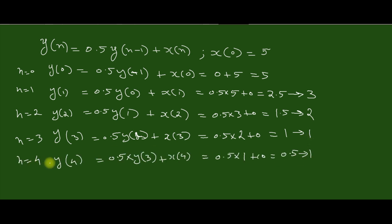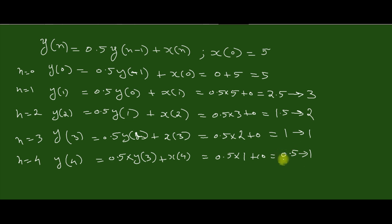For n=4, y(4) = 1. If we repeat for n=5, 6, and so on, we get 1, then 0.5, then 0.5 again equal to 1, and this repeats. This problem is called limit cycle oscillation: the input is zero but the output is a particular value — in certain cases alternating between a positive and a negative number. This is the limit cycle oscillation.